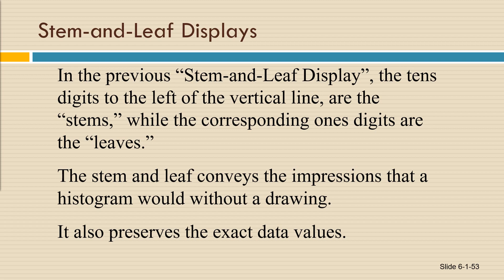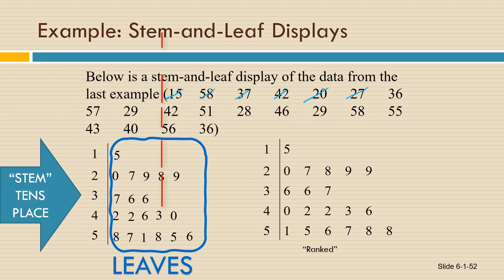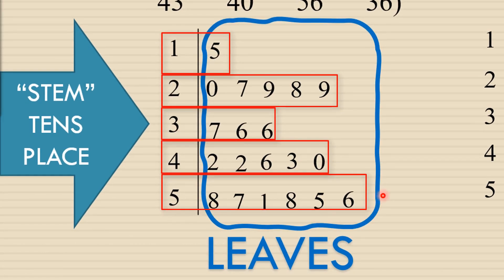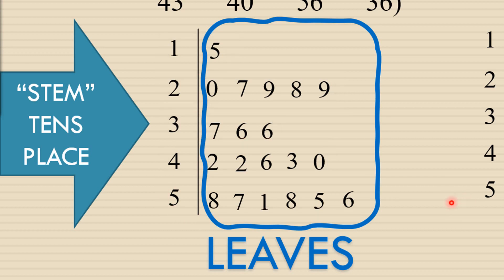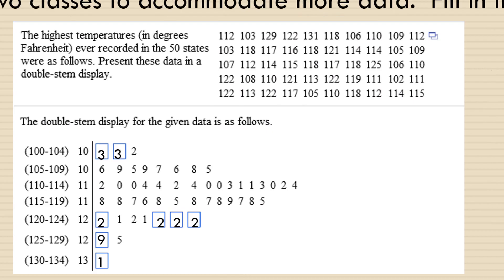So if you look back at the stem and leaf display, you can tell not only are there more numbers in the 50s, but you can also identify specific numbers like the number 58, which appears twice. I hope you found this video helpful. If you did, please give it a thumbs up. That helps other students to find the video.